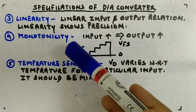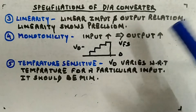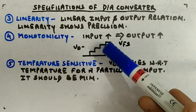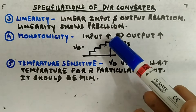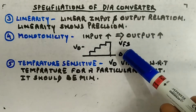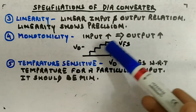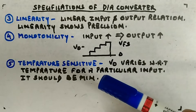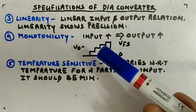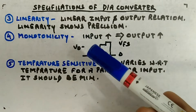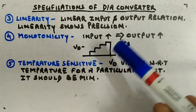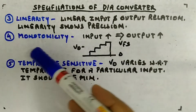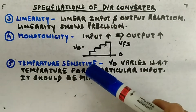Then comes monotonicity. Monotonicity means if you increase the input, your output should also increase. You have seen the waveform during resolution — the output voltage looks like a staircase curve going from zero to the full-scale voltage, increasing as you increase the input in steps. This kind of curve is called a monotonic curve. So monotonicity is expected from your DAC: when the input is increased, the output should also increase and should not go down and come back up.